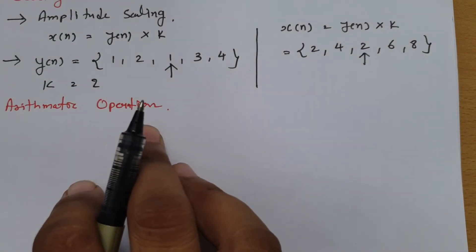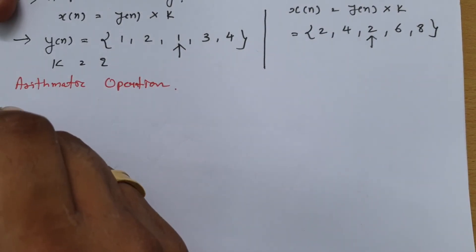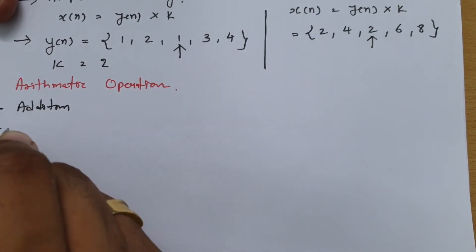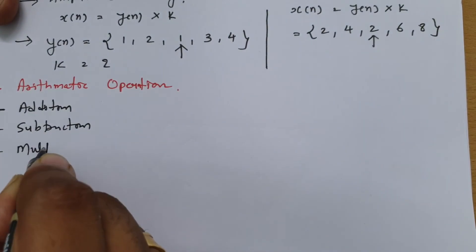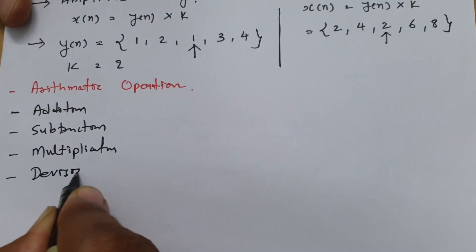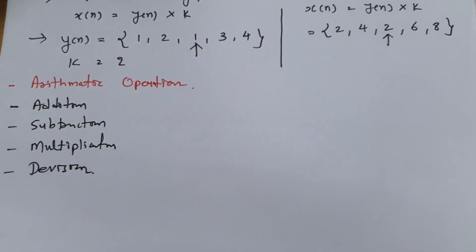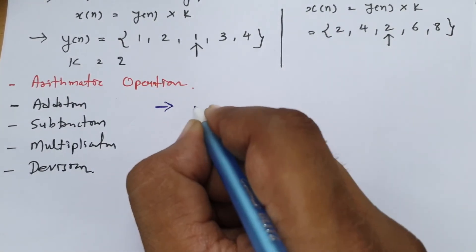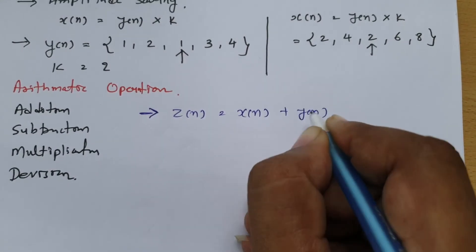In operations on signals we can also have arithmetic operations. In arithmetic operations there are multiple cases: we can have addition, subtraction, multiplication, or division. I will be considering the case of addition, where z of n equals x of n plus y of n.